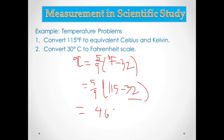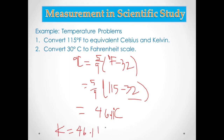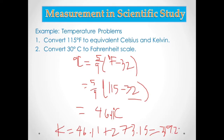So the answer is 46.11 degrees Celsius. If you are going to use the 0.15 precision in Kelvin, use 46.11. To convert to Kelvin: 46.11 degrees Celsius plus 273.15 equals 319.26 Kelvin.